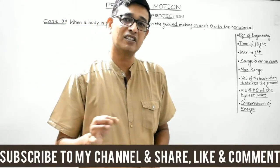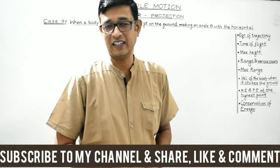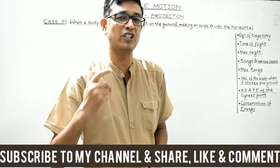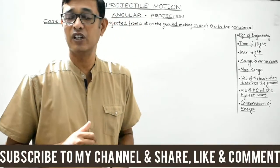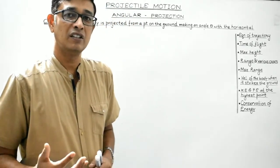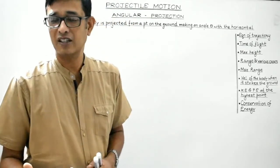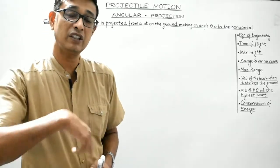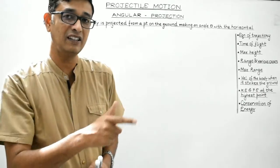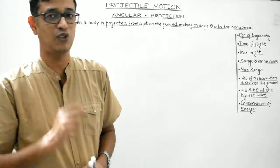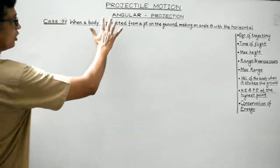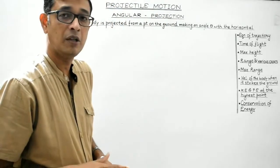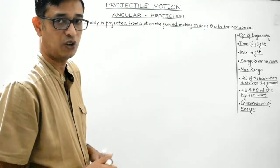Today we will discuss case 2 of projectile motion — the case of angular projection. We will discuss the projectile motion where a body is projected from a point on the ground with a velocity u making angle theta with the horizontal. Our topic is angular projection where a body is projected from a point on the ground making angle theta with the horizontal.